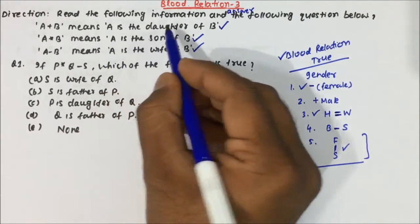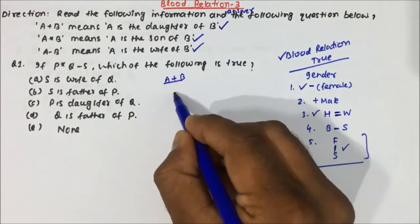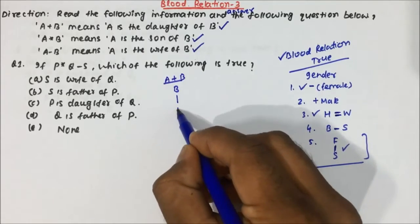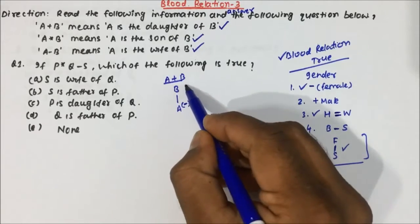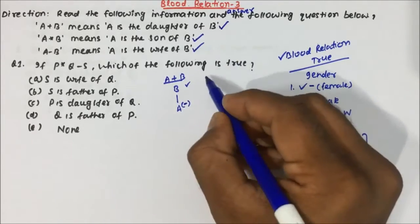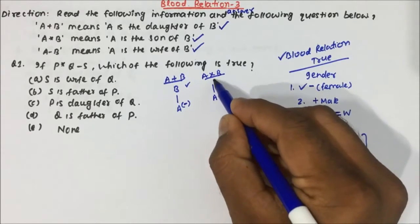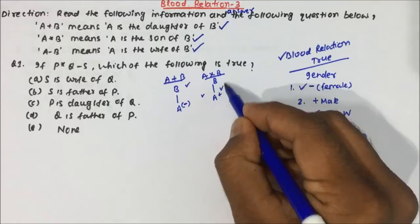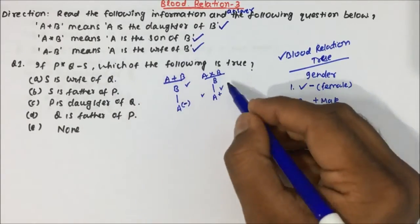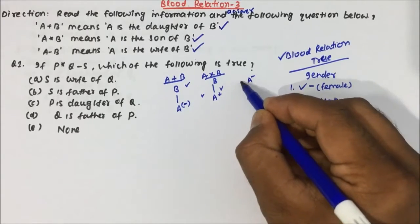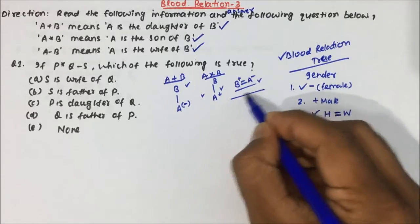Now the question states: A plus B means A is daughter of B — daughter means female, and about B we do not know. A star B means A is son of B — son will be male. And A minus B means A is wife of B — so A will be female and B will be male. This is the Blood Relation tree notation we apply.